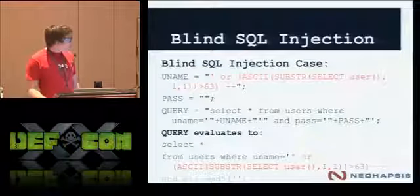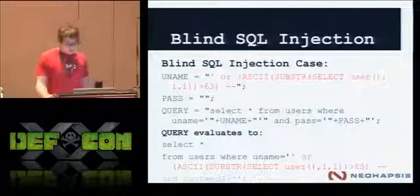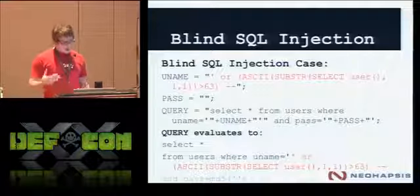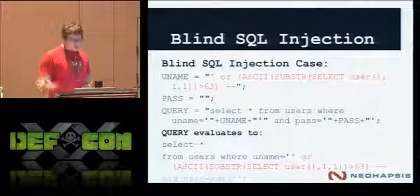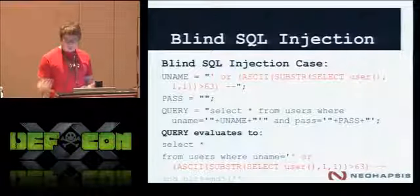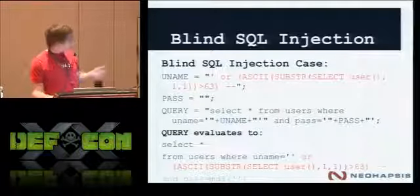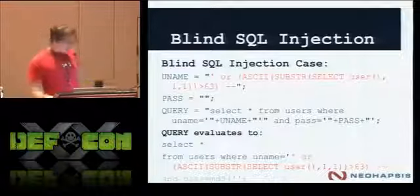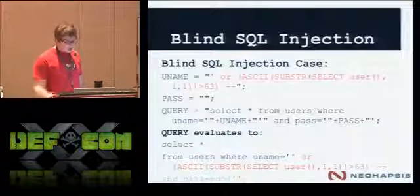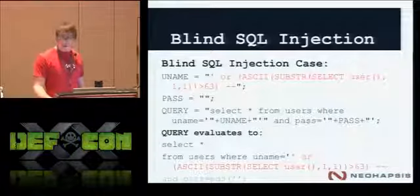Let's walk through blind SQL injection. We're going to do the same kind of attack but we're not going to be able to see the results. We're escaping out of the query with the tick and then doing a substring to grab the username. The query evaluates as shown, with the stuff in gray commented out. The double dash is a comment character — there are a couple different ways to terminate a SQL string.